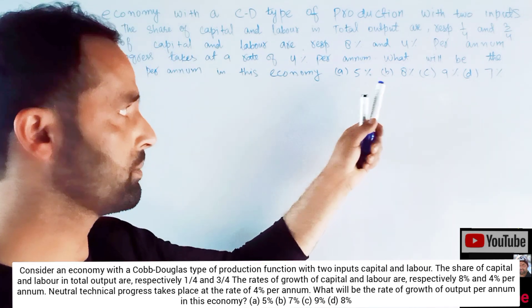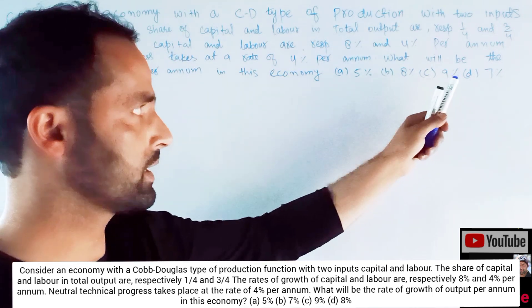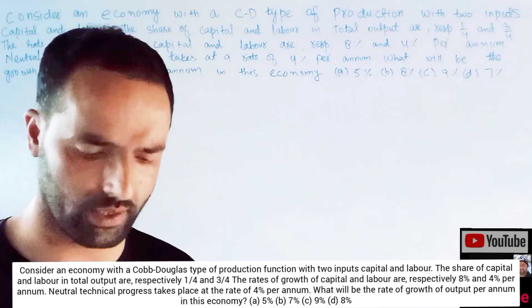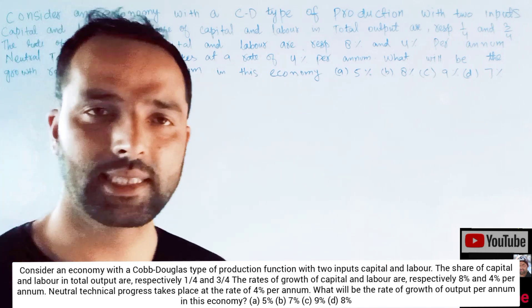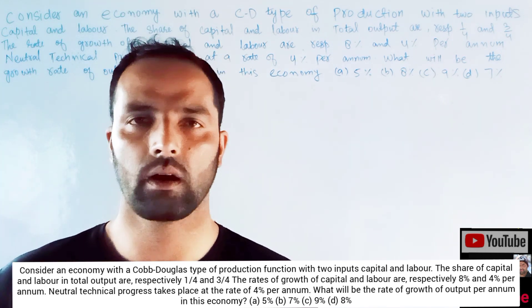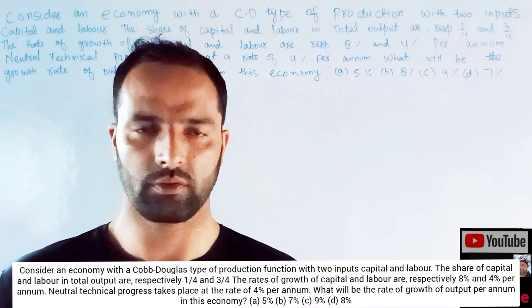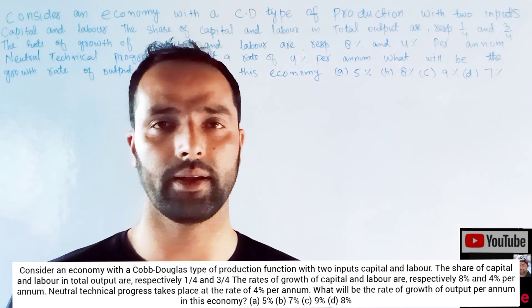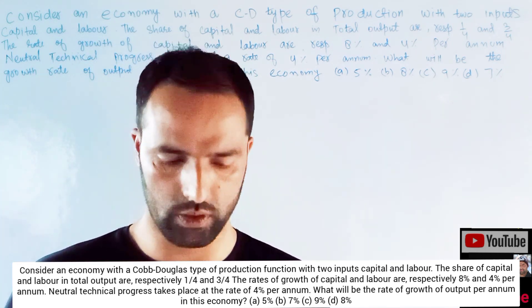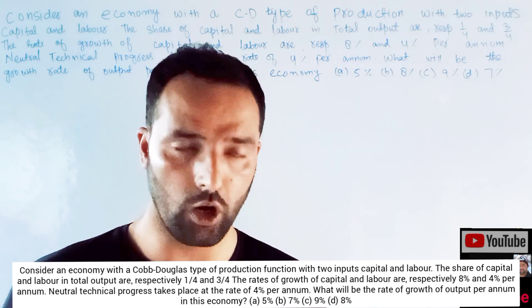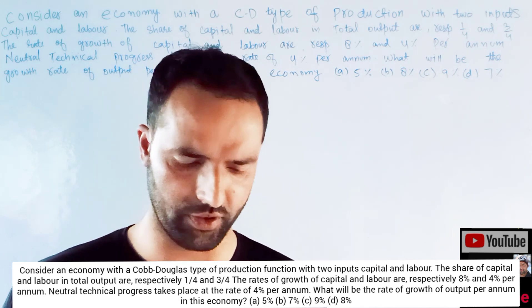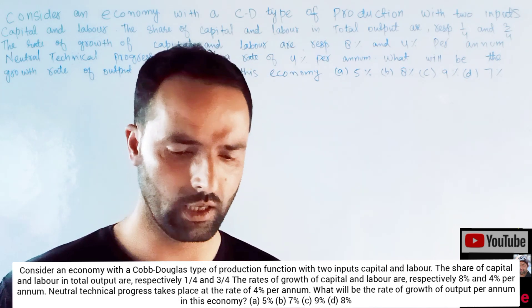The options are given as 5%, 8%, 9%, or 7%. So basically this is the Cobb-Douglas production function and we want to find the growth rate of the economy from this production function.